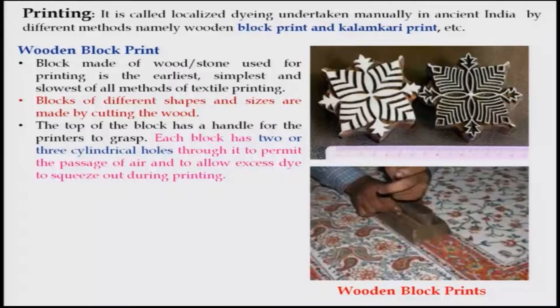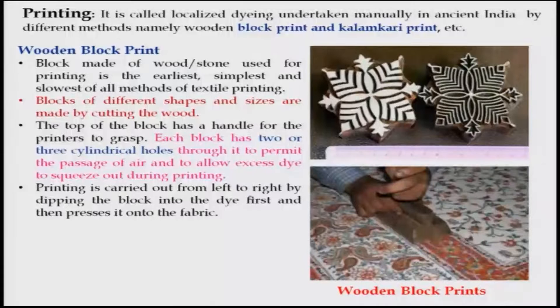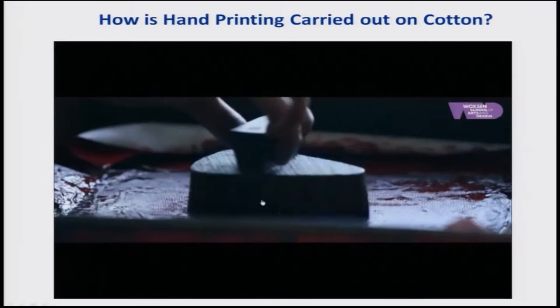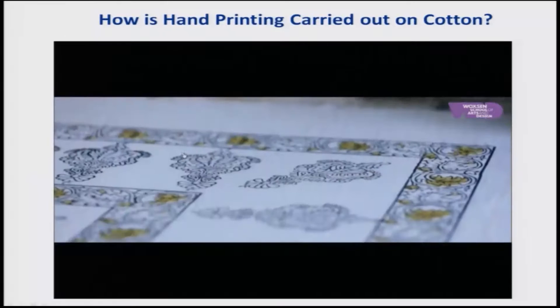Printing is carried out generally from left to right by dipping the block in dye first and then pressing it into the fabric. Concentration is required because any error will spoil the whole cloth. Now let us look at how this hand printing works in a video — he is engraving a design out of wood and then pressing it using the handle, showing various designs.